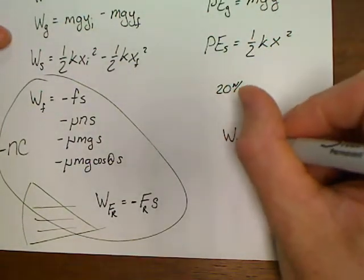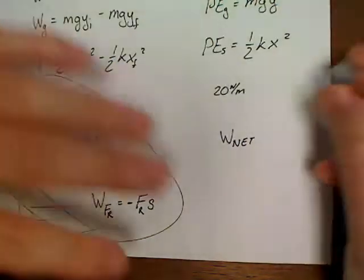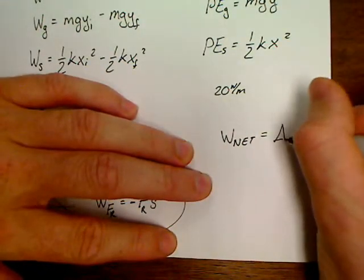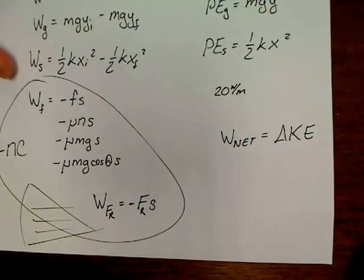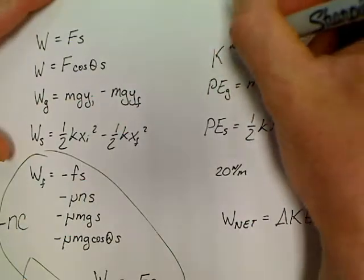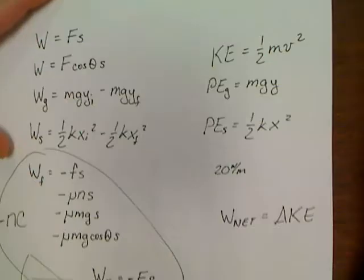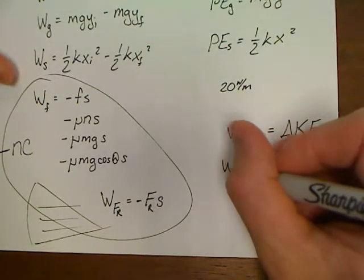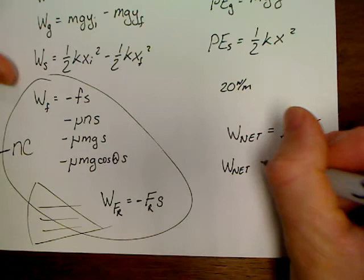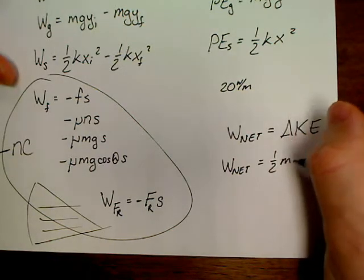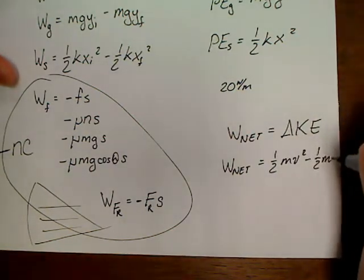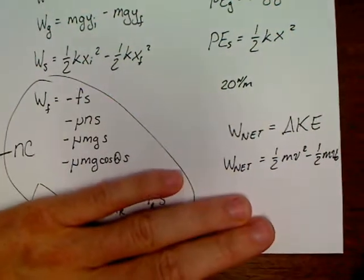Using what we call work net equals delta KE. And since we know that KE, kinetic energy, is one half mass times the velocity squared, we can rewrite work net as one half m·v² minus one half m·v₀².